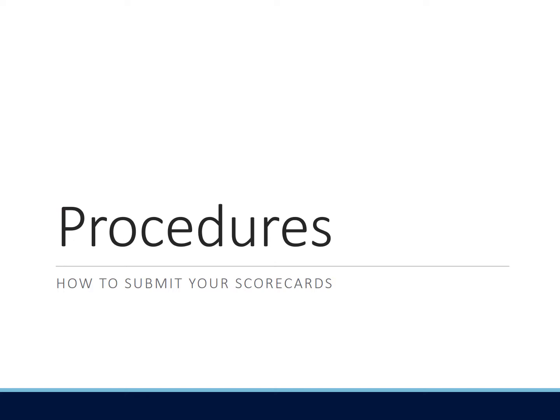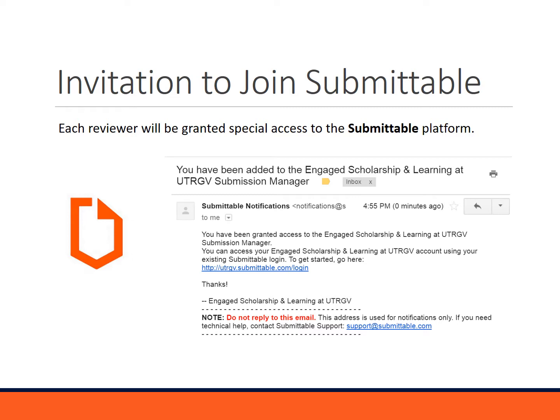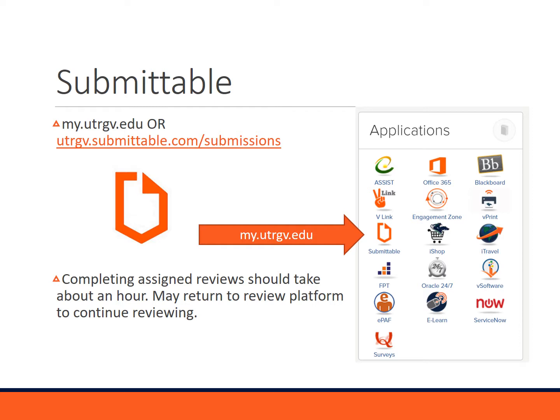Now on to procedures on how to submit your scorecards. We will be sending all of our abstract reviewers an invitation to join on the Submittable platform. You will receive an email in your inbox that looks something like this, and you'll be presented with a link so that you can sign in. Submittable can also be accessed through your myutrgv.edu account if you're a UTRGV affiliate, or you can visit our link here to sign in that way.